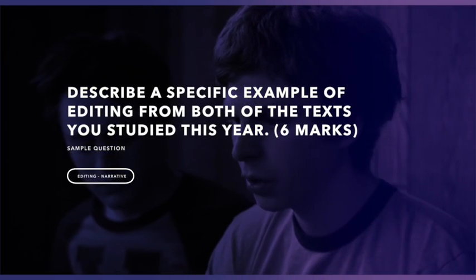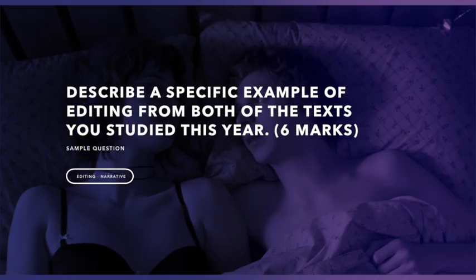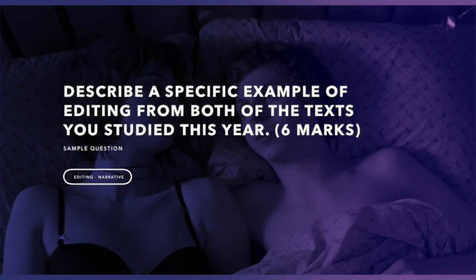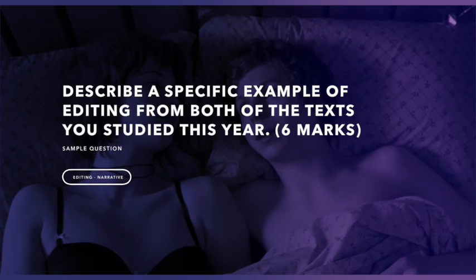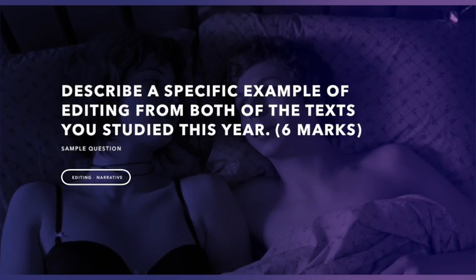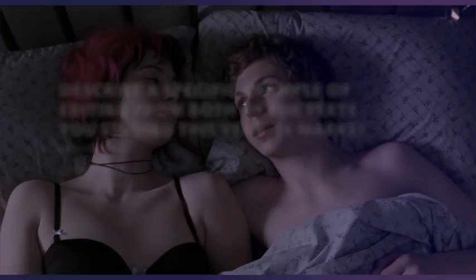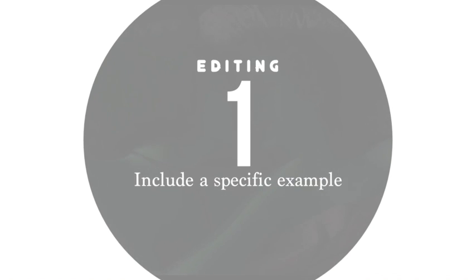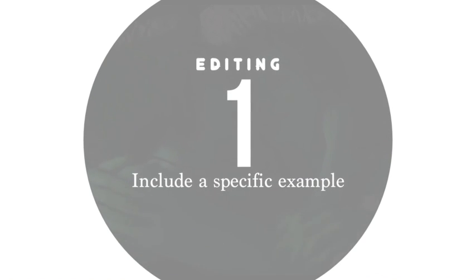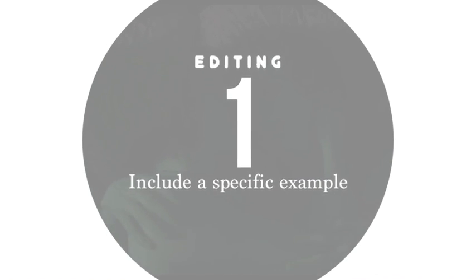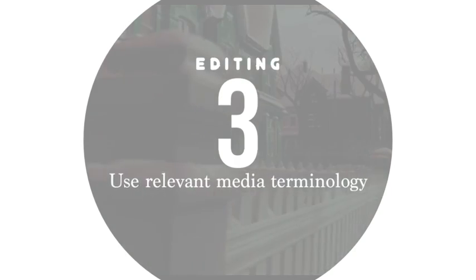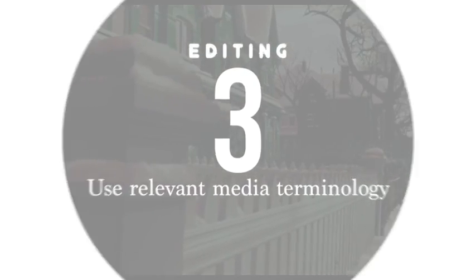Here's the question: Describe a specific example of editing from both of the texts you studied this year. This question is worth six marks. Firstly, let's gather our resources — we're going to combine number one and number three for this part, choosing really good examples and thinking about the terminology we could use when writing about them.